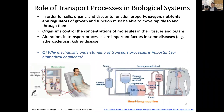Let's first think about the role of transport processes in our biological system. For cells, organs, and tissue to function properly, we know that oxygen, nutrients, and regulators of growth and function must move rapidly to and through them, so that the organisms control these concentrations of molecules in our tissues and organs. Changes in these transport processes are important factors in many diseases, such as atherosclerosis and kidney diseases.